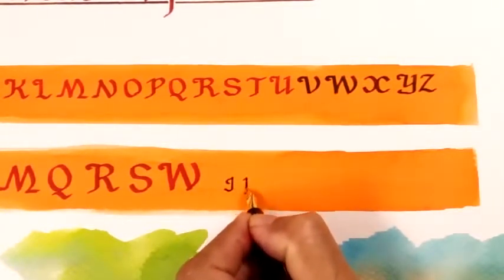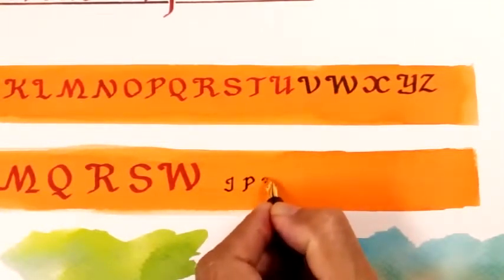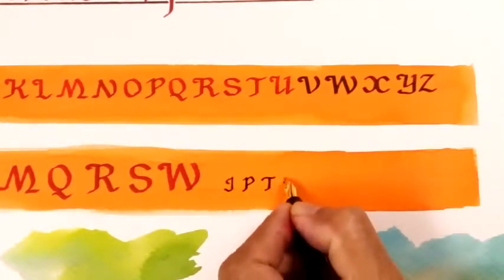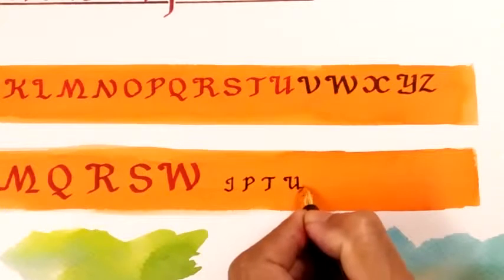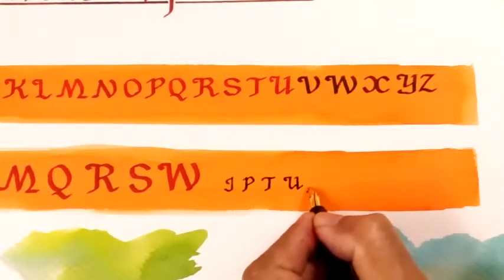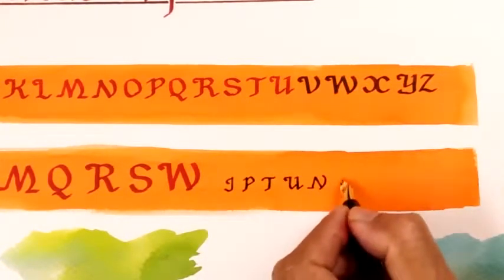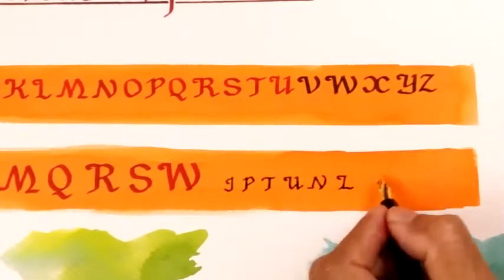Now I have changed to 3.5mm nib. When I mention 8mm, 5mm, and 3.5mm, it is 5 nib height. In uppercase calligraphy writing it is 7 nib height, so you can calculate for yourself. It is not very difficult.